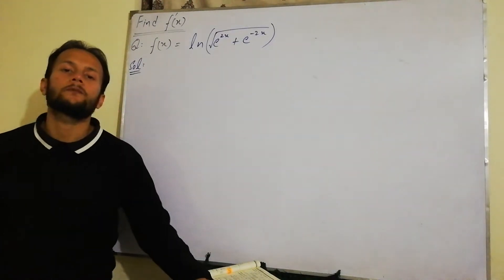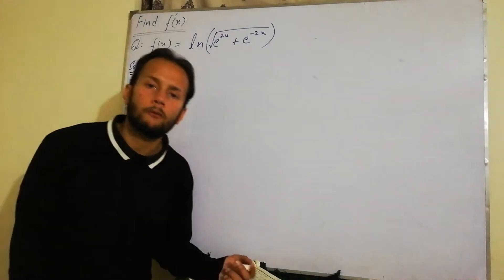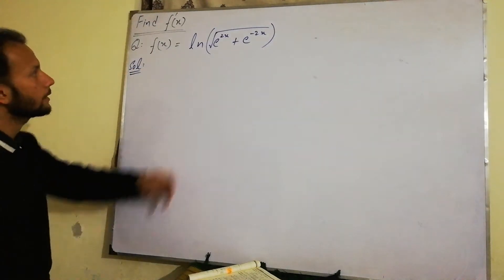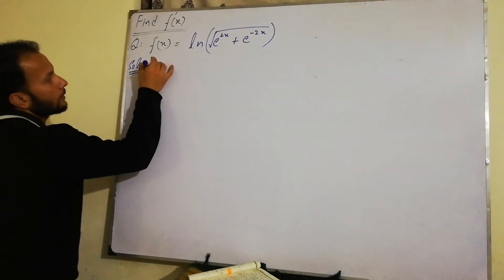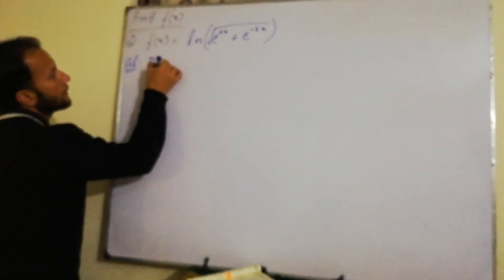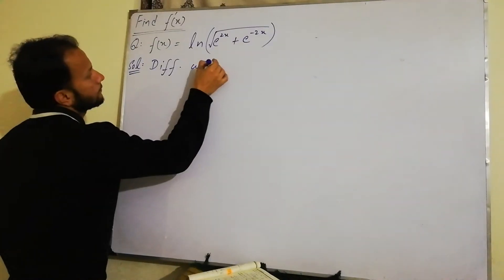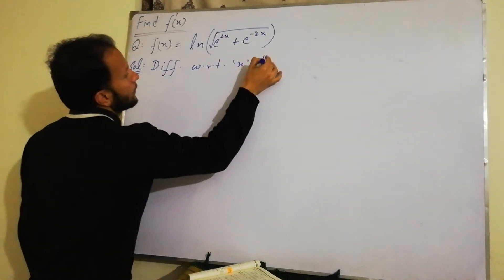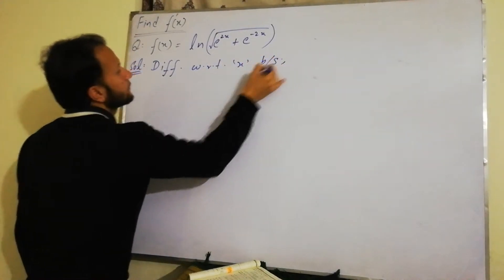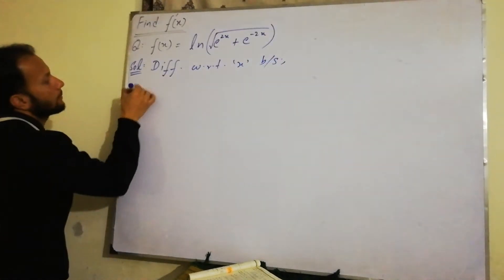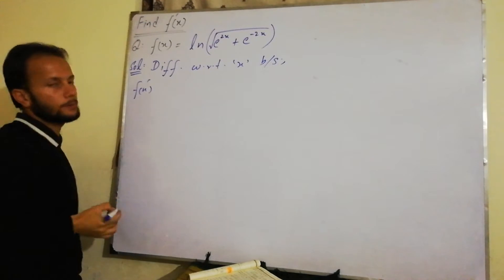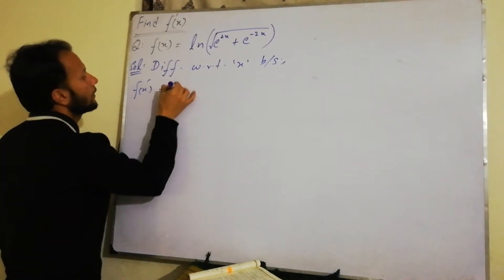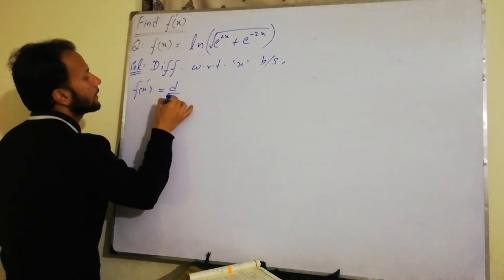Assalamualaikum guys. The question is to find the first derivative. We have a root function in our sum, so we differentiate both sides with respect to x. Here we have f of x, because we represent the first derivative as d by dx.